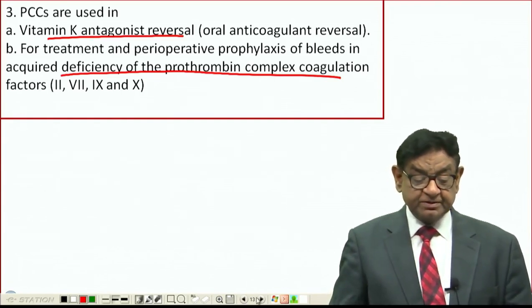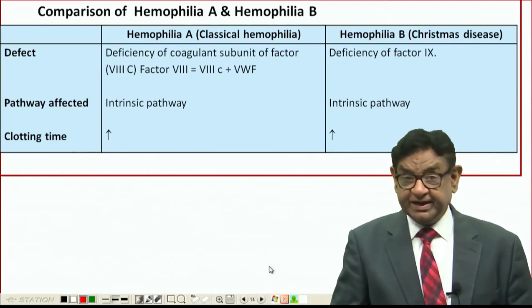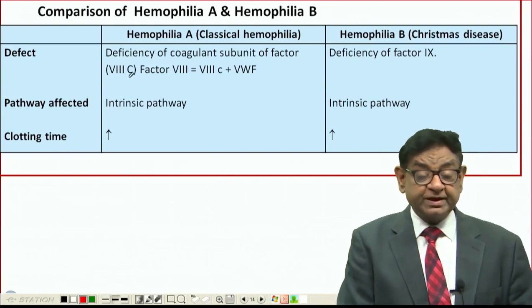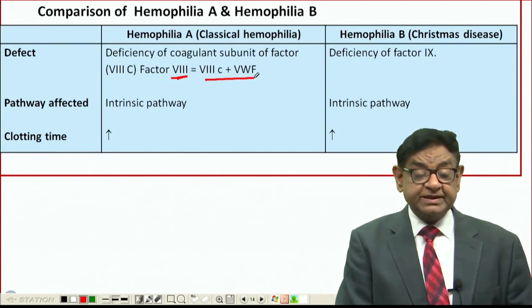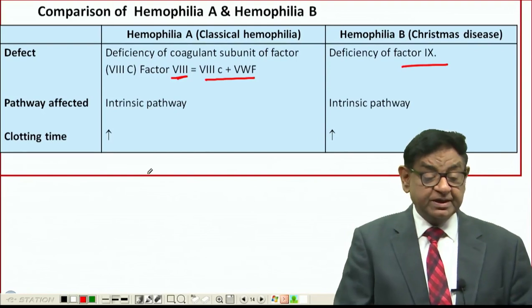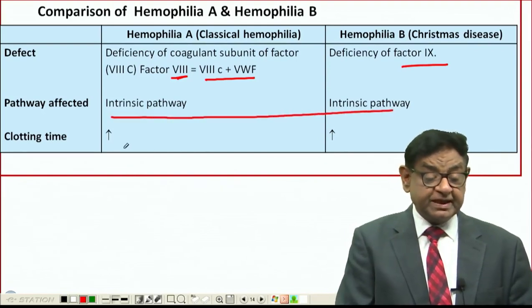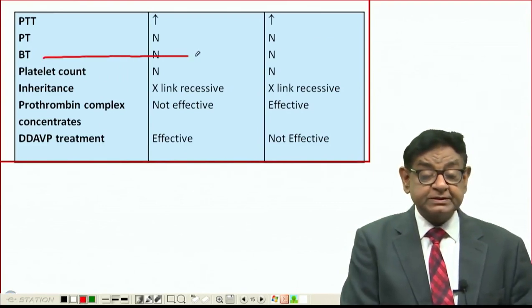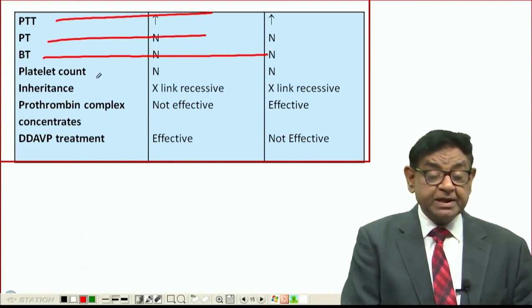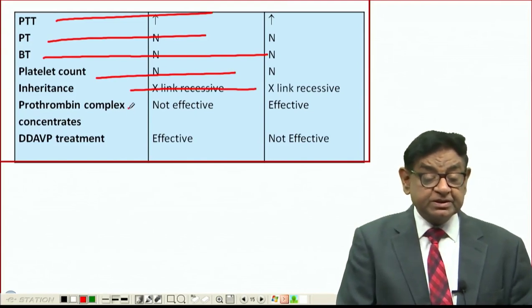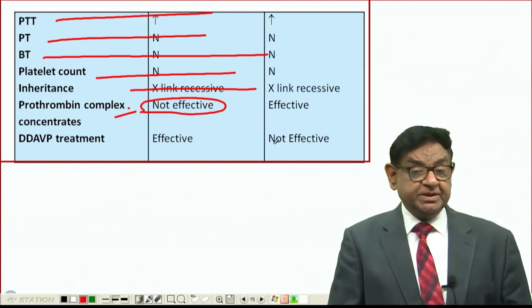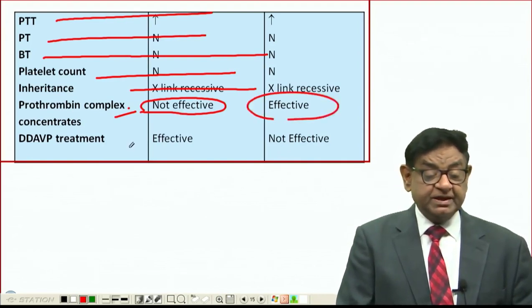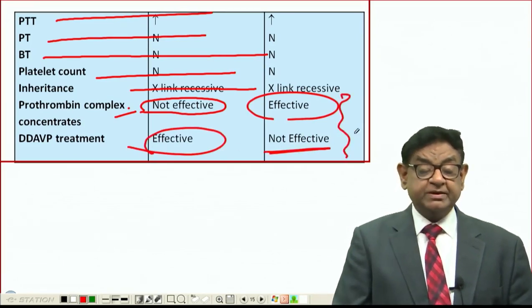Comparing Haemophilia A and B: in A, there is deficiency of Factor 8 (a combination of Factor 8C and von Willebrand factor); in B, there is deficiency of Factor 9. Both affect the intrinsic pathway, so clotting time is increased in both; bleeding time is normal in both; PTT is increased; PT is normal; platelet count is normal. PCC is not effective in Haemophilia A because Factor 8 is not vitamin K-dependent, but PCC is effective in Haemophilia B.